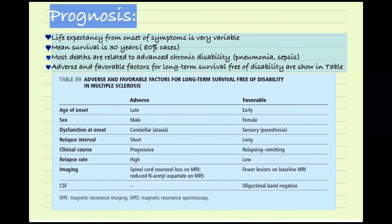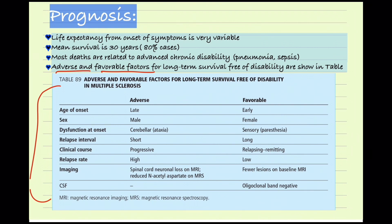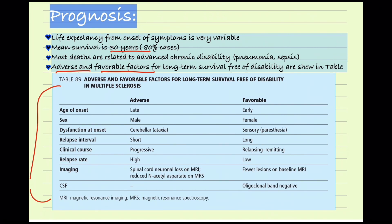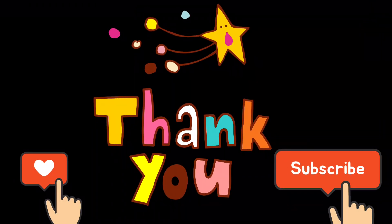The prognosis of multiple sclerosis mainly depends on adverse and favorable factors, summarized in a table. The mean survival is 30 years after the onset of diagnosis in 80 percent of cases. Most deaths are related to advanced chronic disability complications such as pneumonia and sepsis. That's all for today's video — thank you so much for watching.